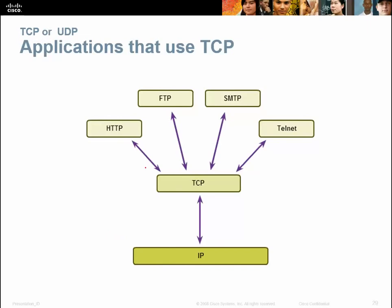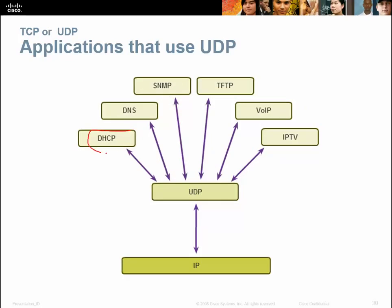Applications that use TCP include HTTP for webpages, FTP for uploading files, SMTP for mail, and Telnet — these all use TCP because they need to be connection-oriented and we have to know the information got through. UDP, on the other hand, is used by DHCP, DNS, some mail via SNMP, TFTP, Voice over IP, and IPTV.